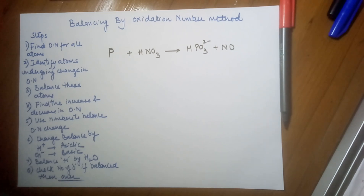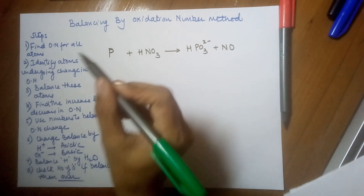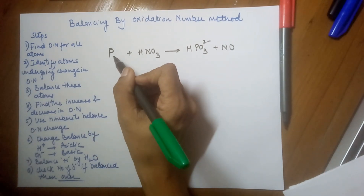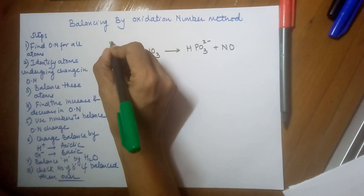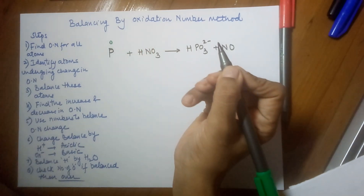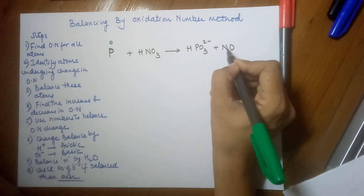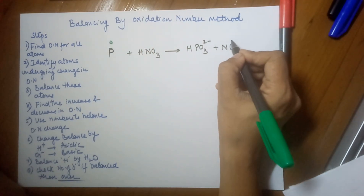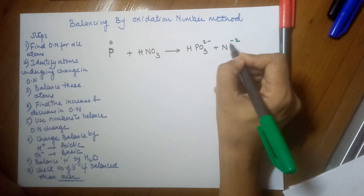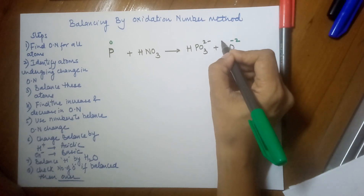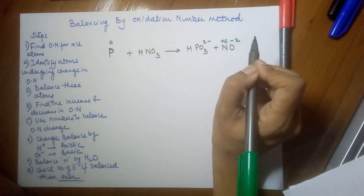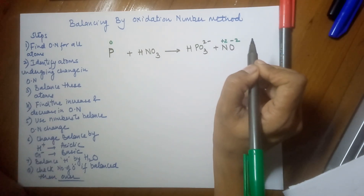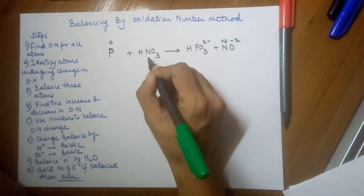The aim is to find the oxidation number for all the atoms. Let's begin. Phosphorus is in uncombined form so the oxidation number becomes zero. In NO, oxygen is minus two, so nitrogen becomes plus two because it is not charged.